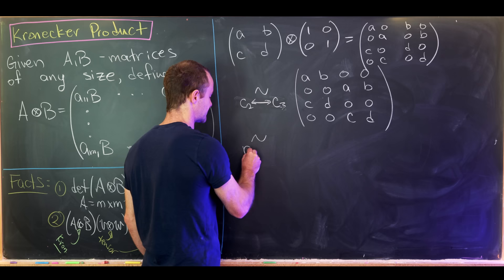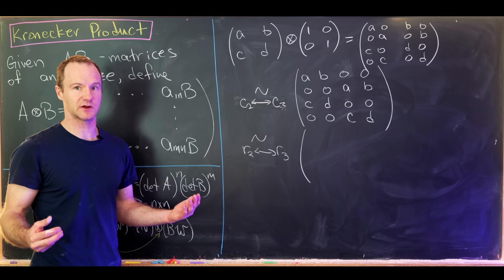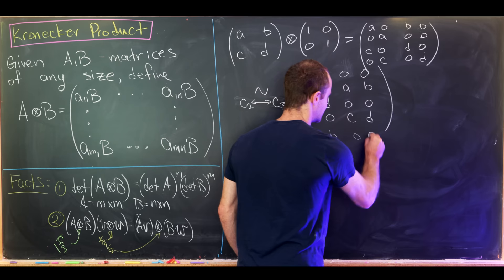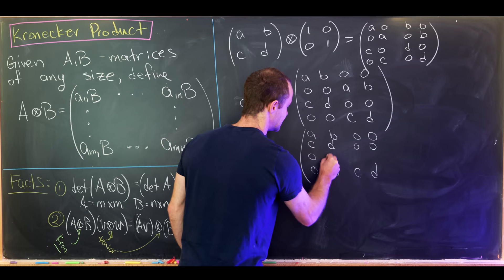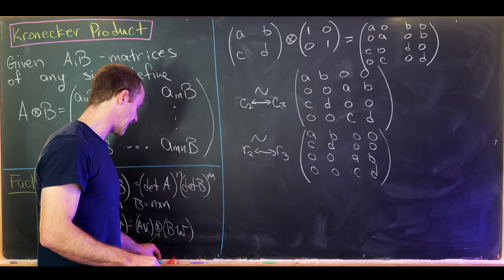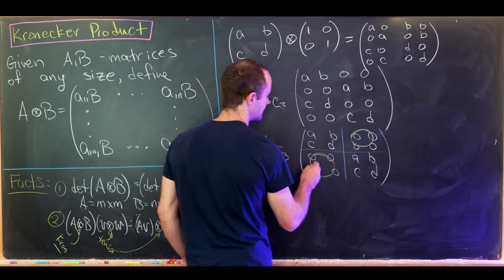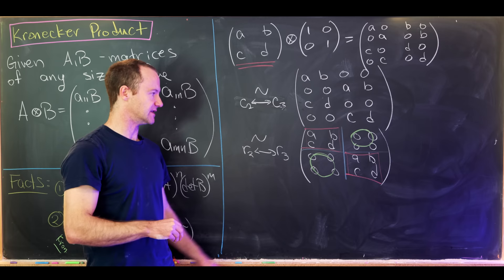Next, swap rows 2 and 3. This multiplies the determinant by another -1, so overall the determinant is multiplied by (-1)² = 1 — unchanged. Rows 1 and 4 stay the same. After swapping rows 2 and 3, we get: row 1 [a, b, 0, 0], row 2 [c, d, 0, 0], row 3 [0, 0, a, b], row 4 [0, 0, c, d]. This is a block diagonal matrix with the original matrix [[a,b],[c,d]] appearing on the diagonal and zeros on the off-diagonal.